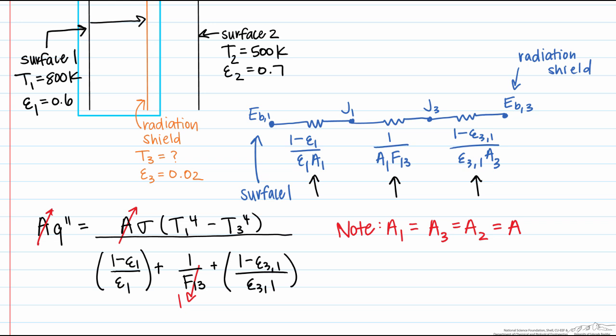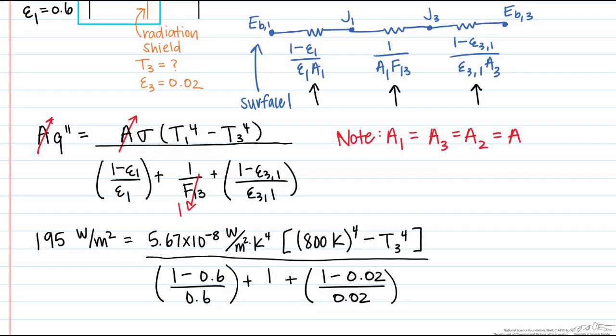So let's put in our numbers. And if we solve for T3, we find that the temperature of the radiation shield is equal to 696.5 Kelvin.